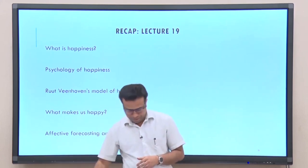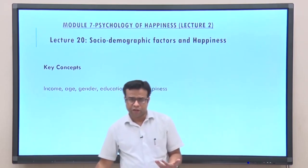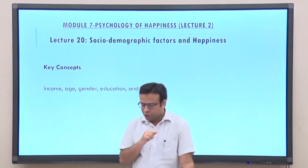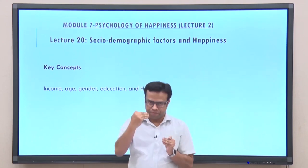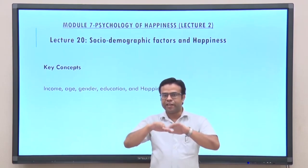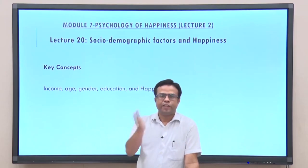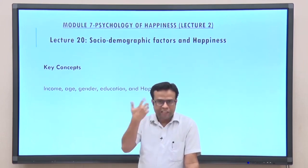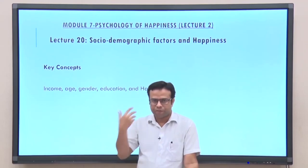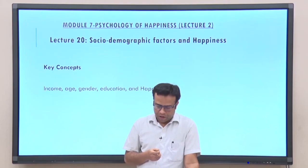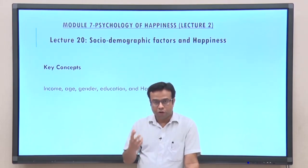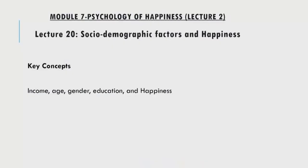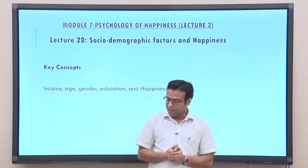Today we will talk about sociodemographic factors and happiness. This is lecture number 2 of module 7, and overall it is lecture number 20. We will talk about how certain objective aspects of our life — objective realities or life circumstances — influence happiness, which is primarily a subjective experience. We will discuss four sociodemographic factors specifically: income, age, gender, and education, and how they influence our happiness.